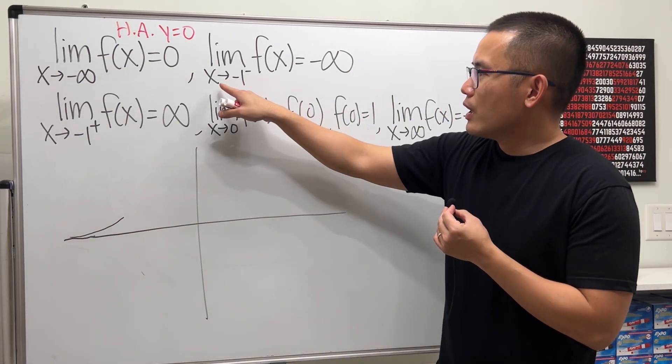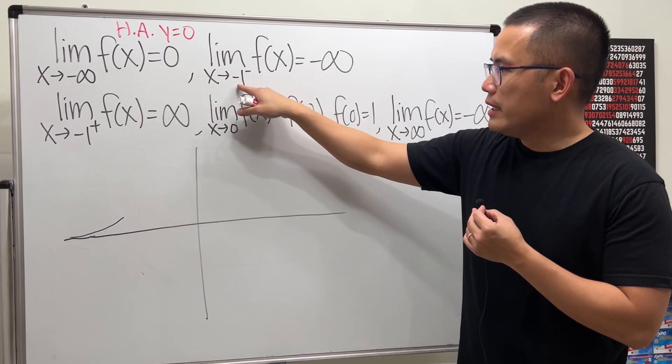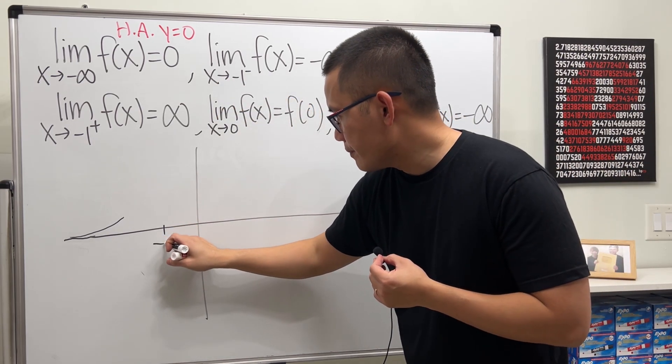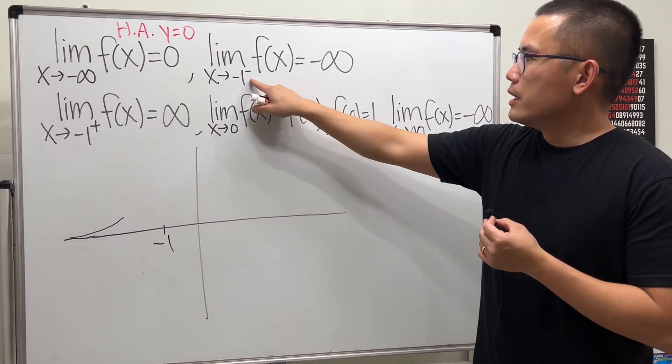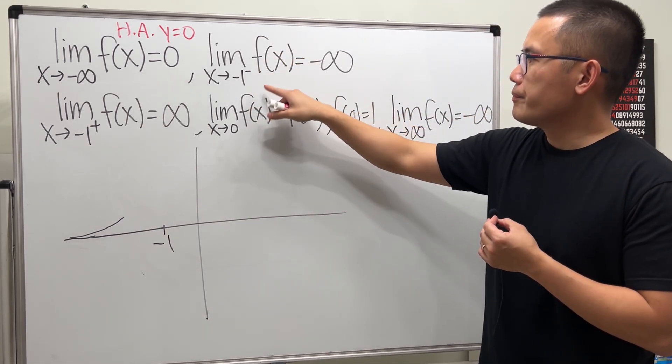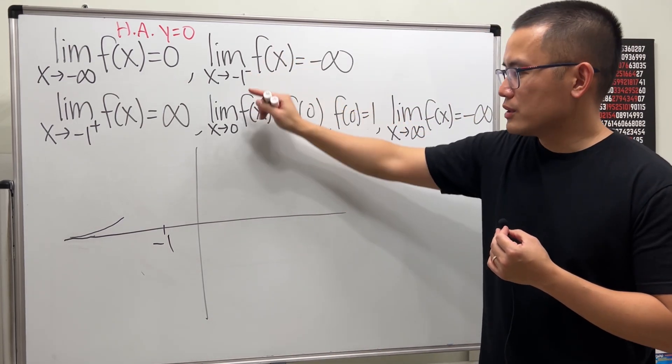Now, next. When we are approaching negative 1, so let's make a mark right here, negative 1. Negative 1 for the function, from the negative side, by the way, so it's a little bit to the left.